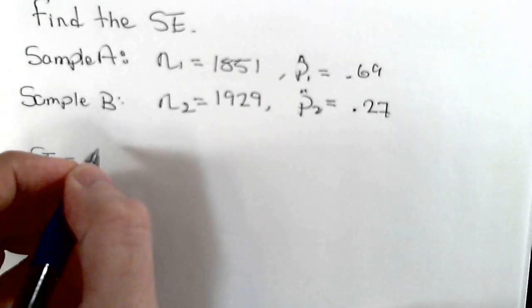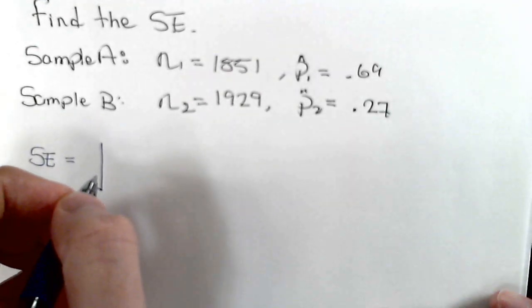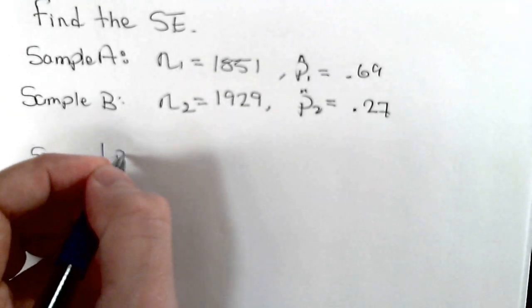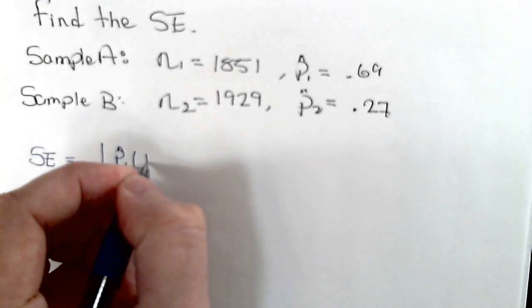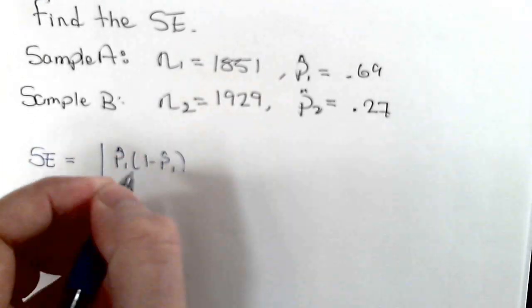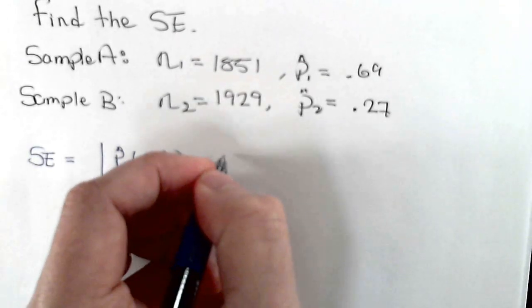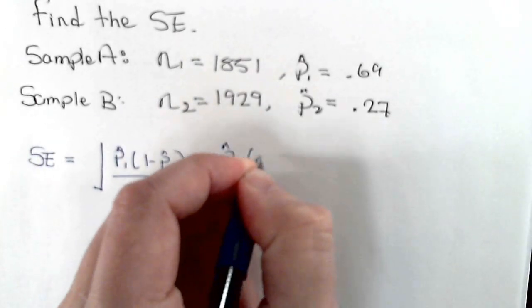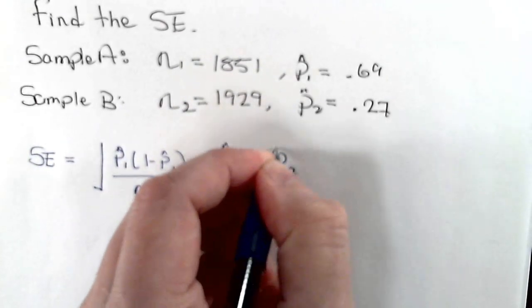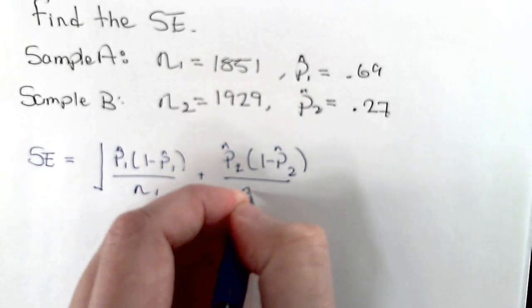The formula for the standard error is equal to the square root of the first sample proportion, then 1 minus that sample proportion, divided by its sample size, plus the second sample proportion, then 1 minus that sample proportion, divided by that sample size.